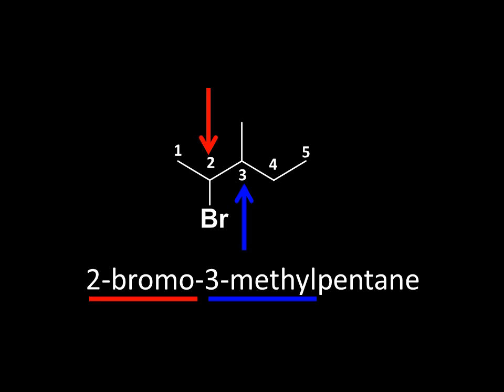There's also a one-carbon group attached. That's a methyl group, thinking back to our prefixes: one carbon, meth — that's methyl. So 2-bromo, 3-methyl, pentane. Notice that we've numbered from this end of the molecule to keep these numbers as small as possible. That's the other rule to keep in mind. If we had numbered from the other end, carbon-1 there would put bromine on C4 and the methyl group on C3 — and we want to avoid that.